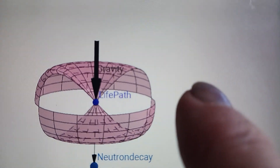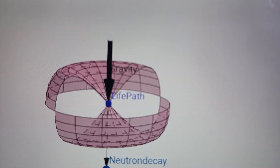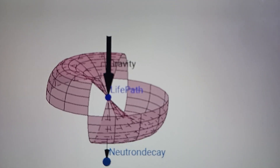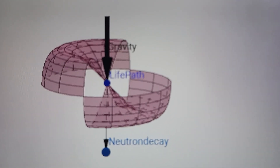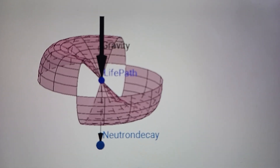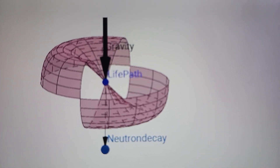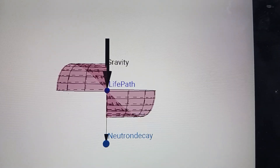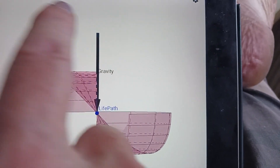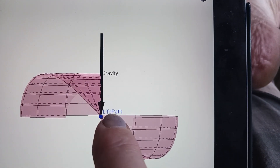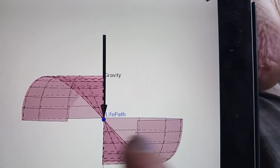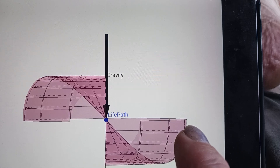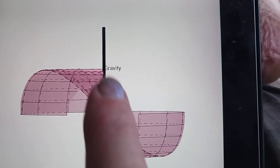The bottom half of the surface is basically the expansion part of neutron decaying, and the top half is gravity compressing — the two parts: expansion and contraction. One thing to notice is that the surface is only half completed, by design. This cross-section includes a full sine wave, a full cycle — but that's only half of the surface.